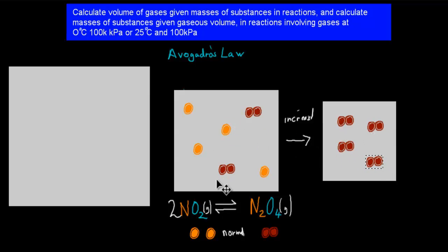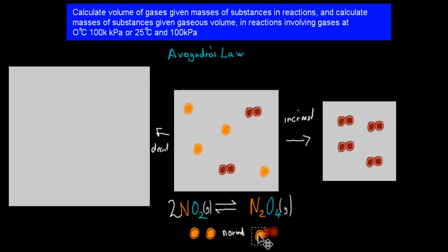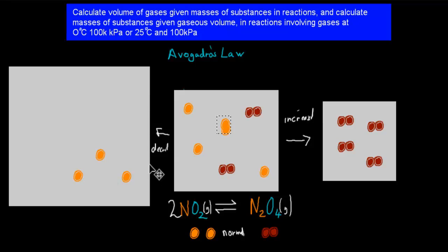All the nitrogen dioxide is gone because it all turns into di-nitrogen tetroxide. And if we do the opposite — if we decrease the pressure by increasing the volume — originally we had four nitrogen dioxide molecules and two di-nitrogen tetroxide molecules, but now all of our di-nitrogen tetroxide molecules have turned back into nitrogen dioxide molecules.